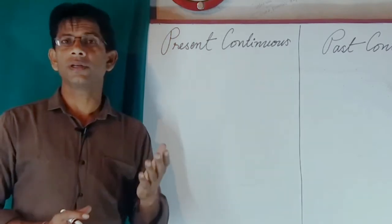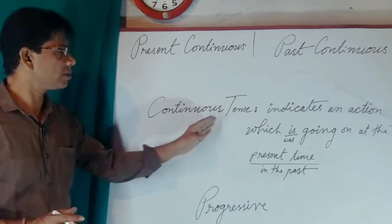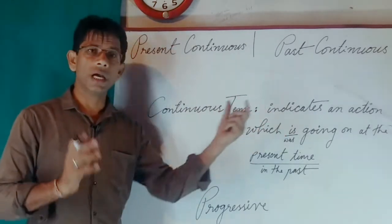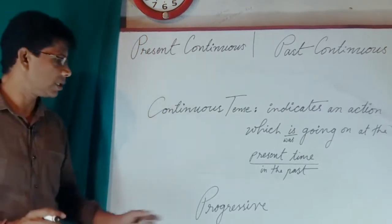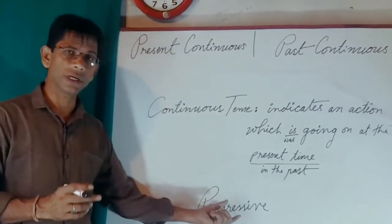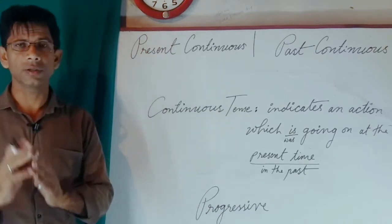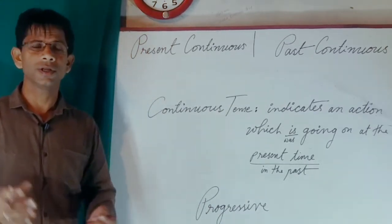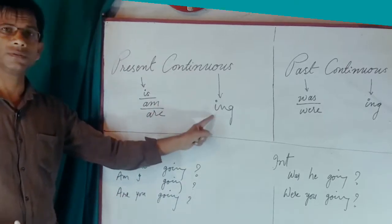First, let me tell you what continuous tense is. Continuous tense indicates an action which is going on at the present time or in the past. The other name of this tense is 'progressive' — progressive means continuous and continuous means progressive.